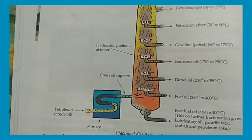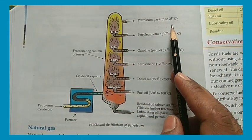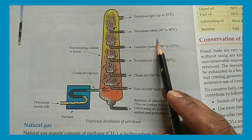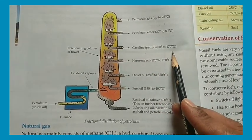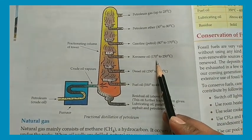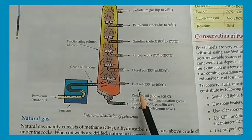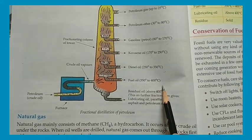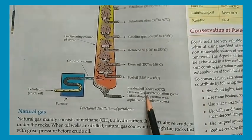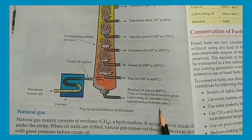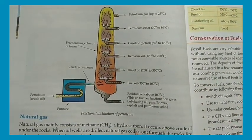In the fractionating column figure, we can see the different fractions obtained at specific temperatures: petroleum ether at 25°C, gasoline at 32–80°C, kerosene at 80–170°C, diesel at 170–250°C, fuel oil at 250–350°C, and residue above 400°C. The residue is used in the form of paraffin wax, asphalt, and petroleum coke. This is the overall process of fractional distillation.